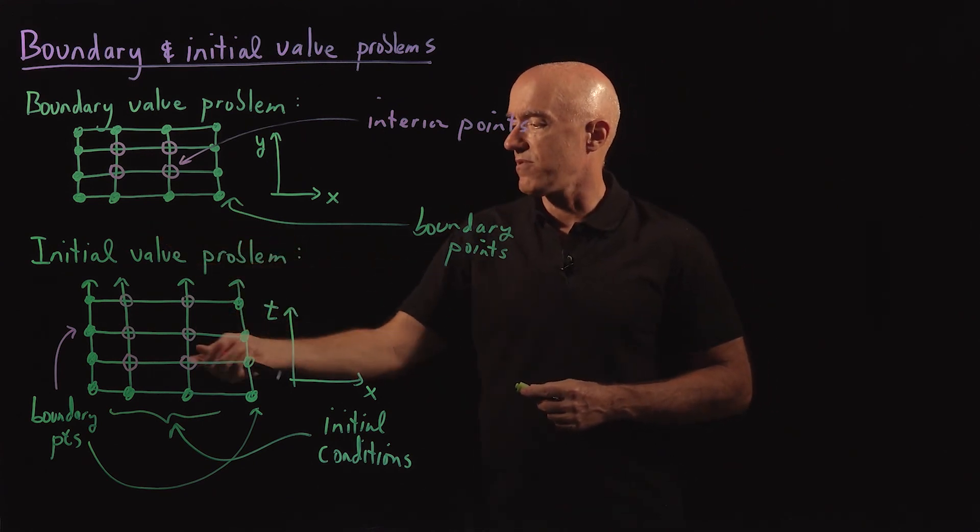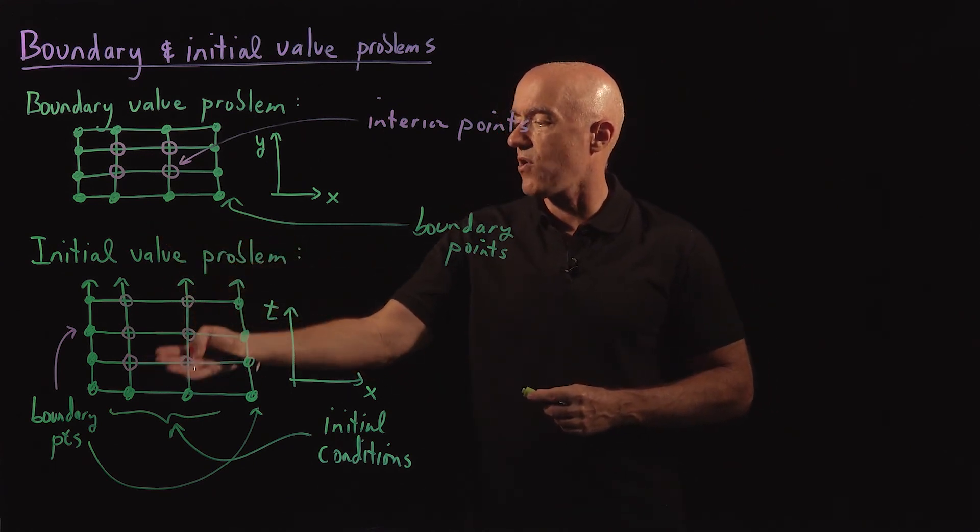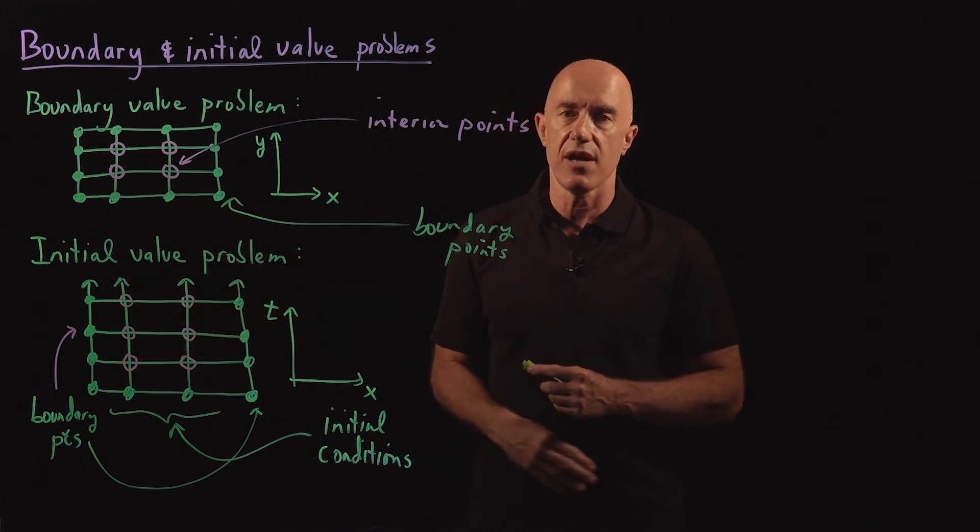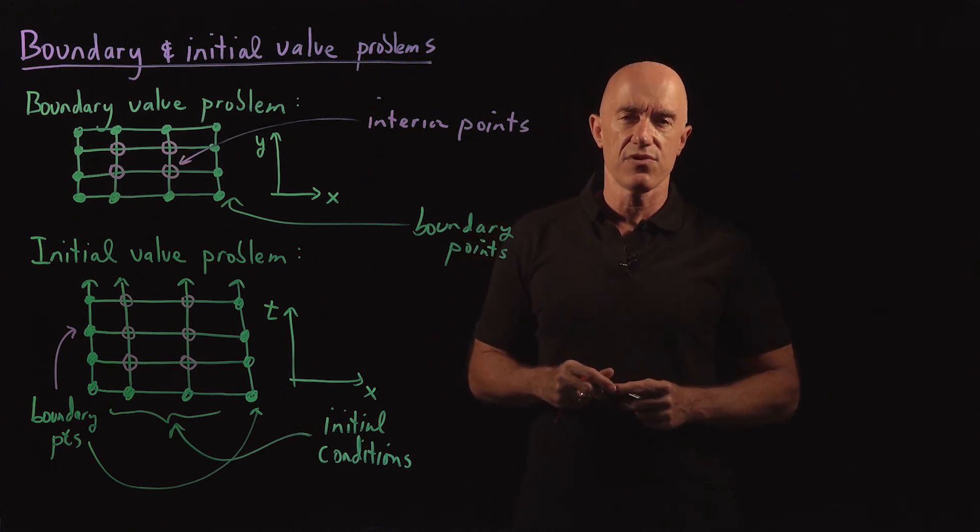But in the initial value problem, we're marching the solution forward and first finding the first line, then the second line, and then the third line. A different flavor to the problem.